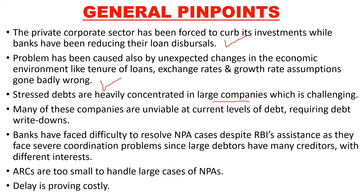Many of these companies are unviable at current levels of debt, requiring debt write-downs. They simply cannot pay the debt, so write-offs have to be done. Banks have faced difficulty resolving NPA cases despite RBI's assistance, because large debtors have many creditors with different interest rates and different terms and conditions, creating a coordination problem.